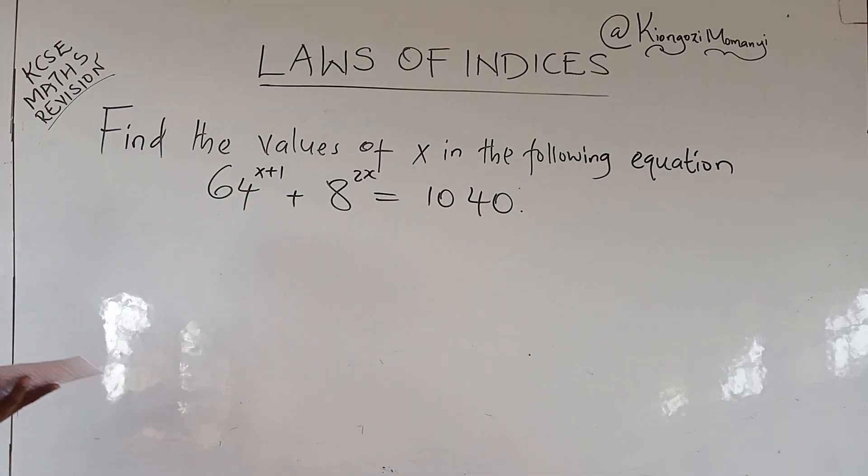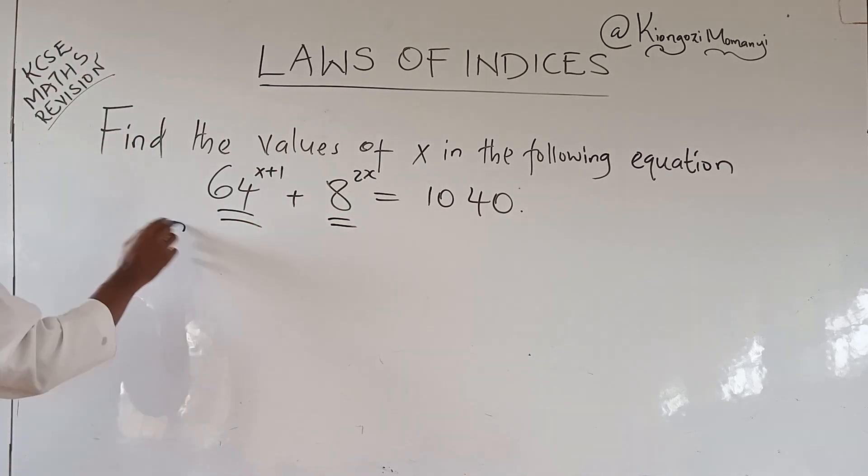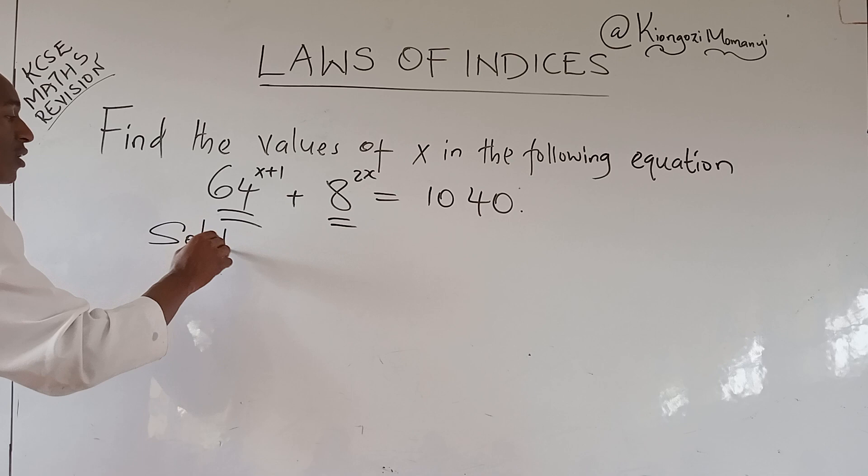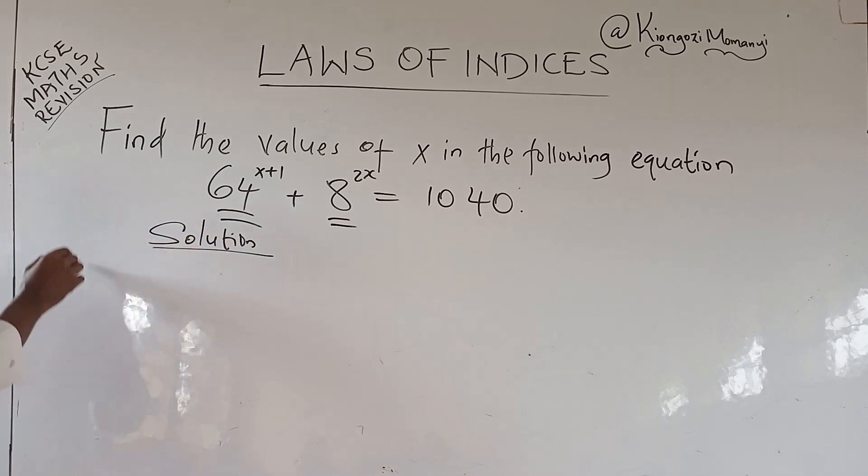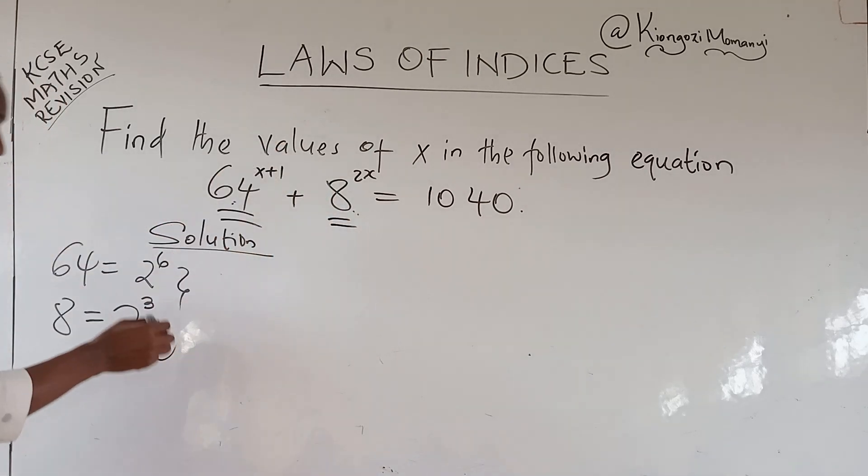Now solution to this, we begin by prime factorizing 64 and 8. This prime factorization of 64, solution: 64 is the same as 2 raised to power 6, and 8 is the same as 2 raised to power 3. So these two are going to be substituted in these values as follows.